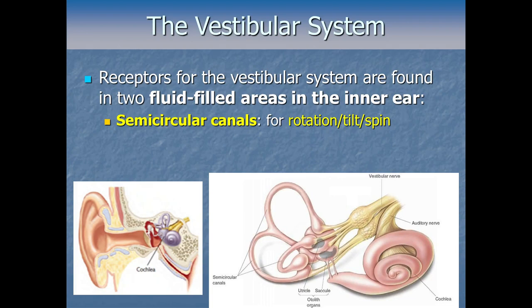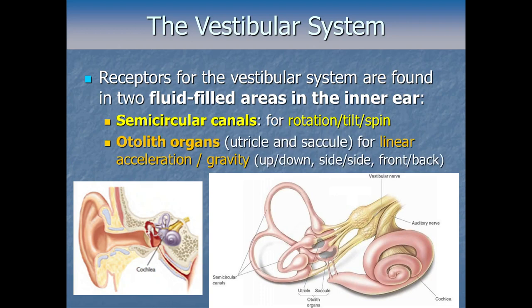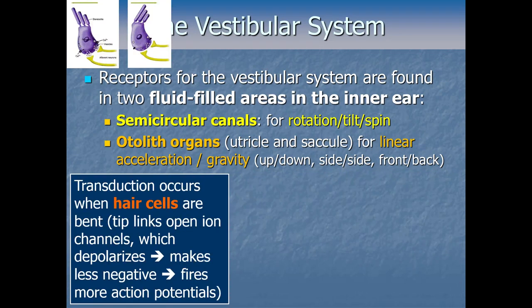The second set of detectors is the otolith organs — specifically the utricle and saccule — located in a more central lump of the vestibular structure. These contain neurons that fire for linear acceleration, which includes gravity. So they handle straight up-and-down, side-to-side, or front-to-back acceleration, with no spinning involved.